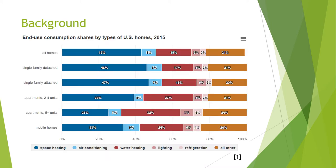To compare different homes and energy consumption, they were split up into different types. My apartment falls into the apartment category with more than five units. As you can see, this plot includes space heating, air conditioning, water heating, lighting, refrigeration, and all other.